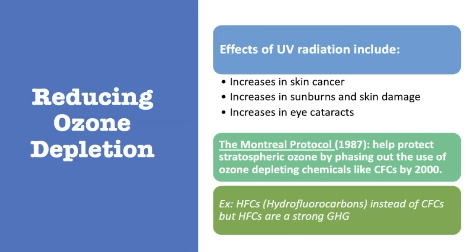The reason it's so important to reduce ozone depletion is to avoid the effects of UV radiation, because the ozone layer protects us from that radiation. By trying to protect the ozone layer, we are also helping protect humans, animals, and other organisms from incidences of sunburn, skin damage, skin cancer, and eye damage such as cataracts. So let's get into some details about what greenhouse gases are and what the greenhouse effect is.